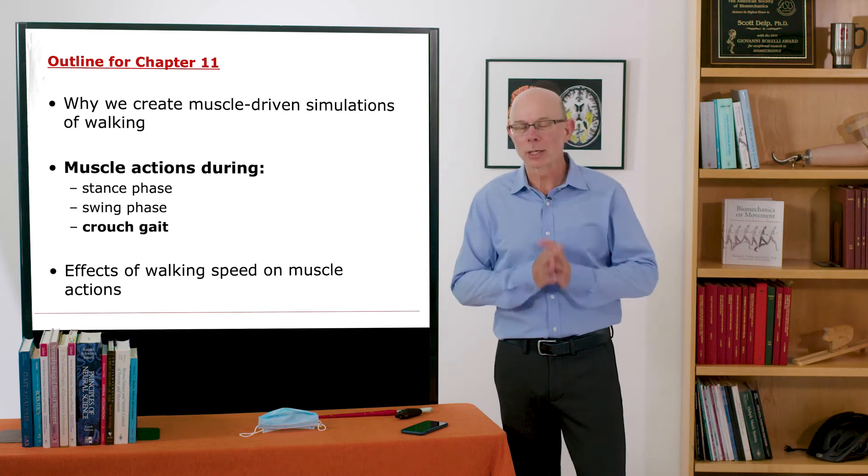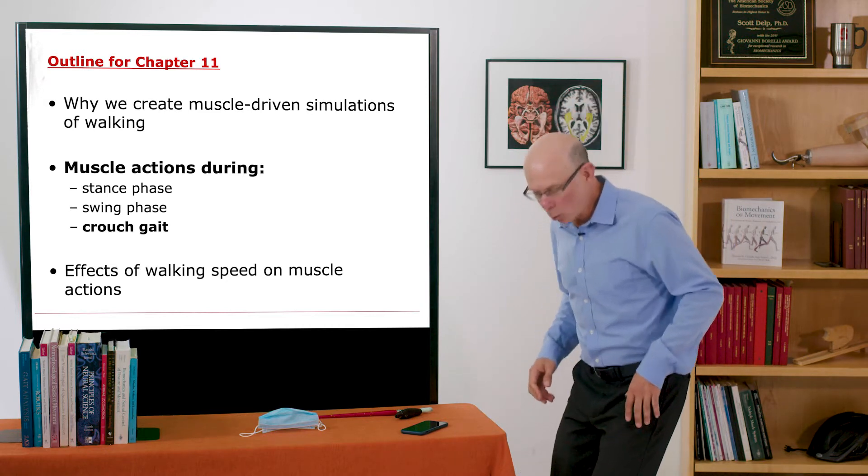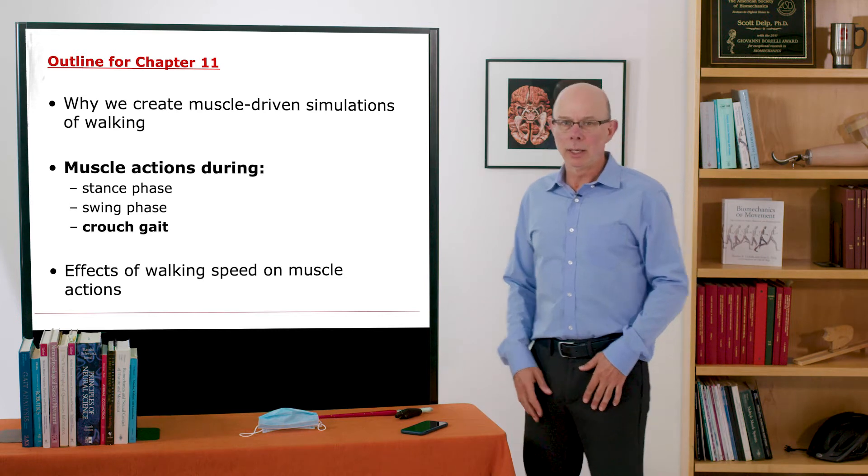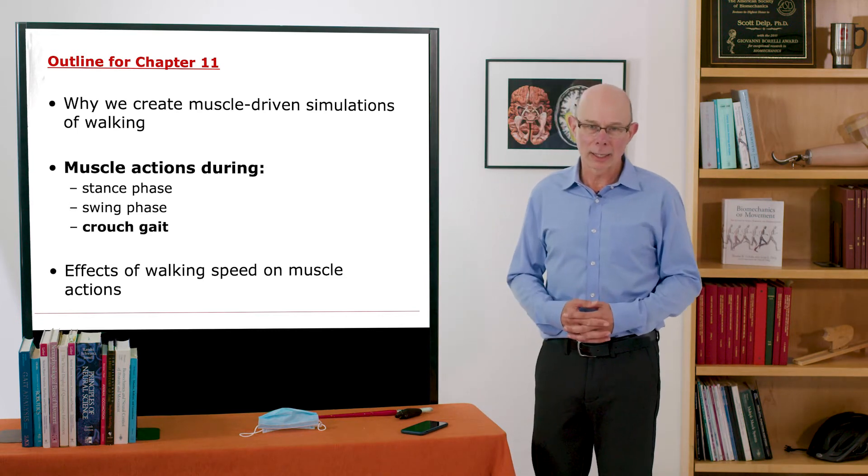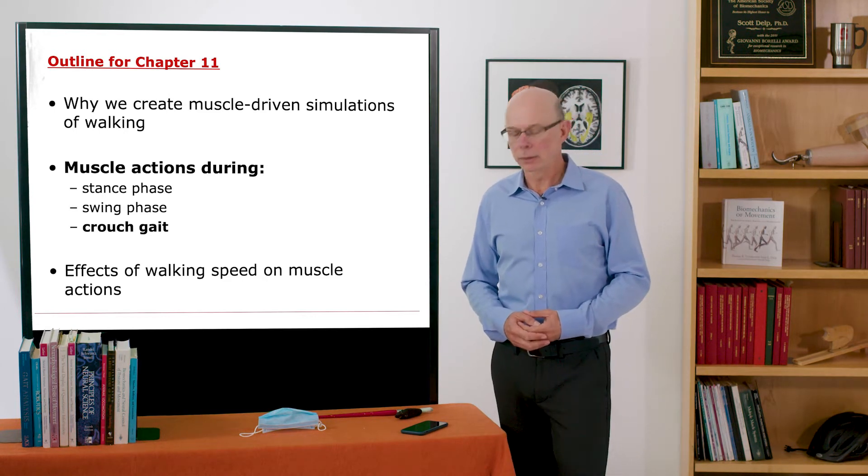We care about this because it's quite common. Individuals, for example with cerebral palsy, walk down in a crouch gait. It's energetically inefficient, it loads your joints, they can be painful, it makes you shorter and is an inefficient way to move.